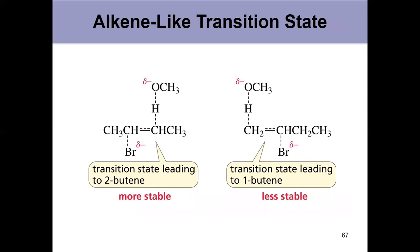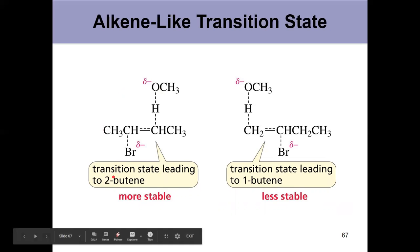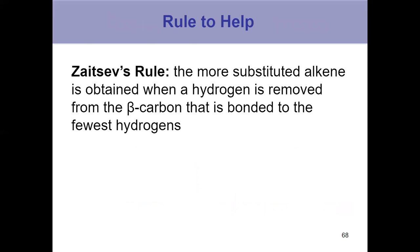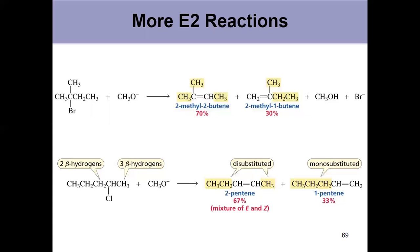Looking at the transition state, the one with the more stable alkene is more stable overall — the transition state is formed more easily. That rule for quickly predicting the more stable alkene has a name: Zaitsev's rule. Zaitsev's rule says the more substituted alkene is obtained from an elimination reaction when you pull a hydrogen off whichever beta carbon is bonded to the fewest hydrogens. It's kind of the direct opposite of Markovnikov — Markovnikov told us to add hydrogen to whatever carbon has the most hydrogens. The rich get richer. Zaitsev flips it around: the poor get poorer.